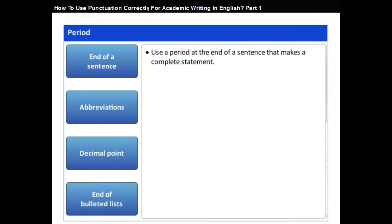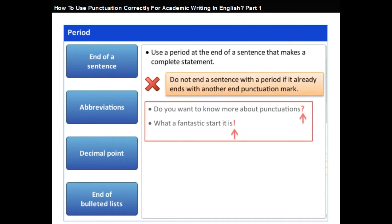A period is added at the end of a sentence to make that sentence a complete statement. However, do not end a sentence with a period if it already ends with another end punctuation mark. Periods and commas always go inside quotation marks.